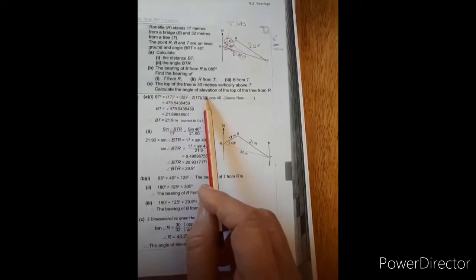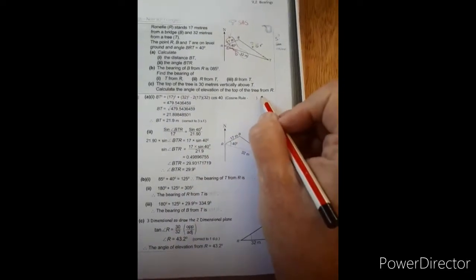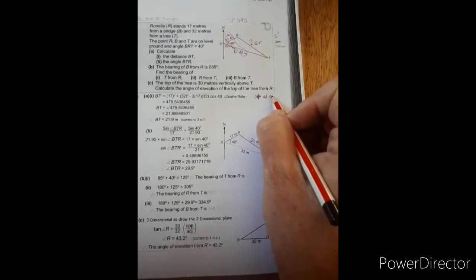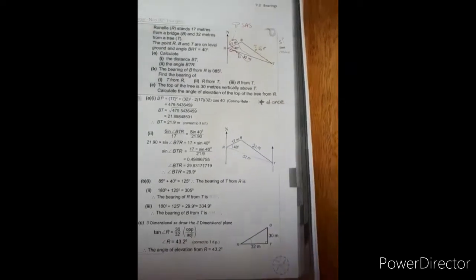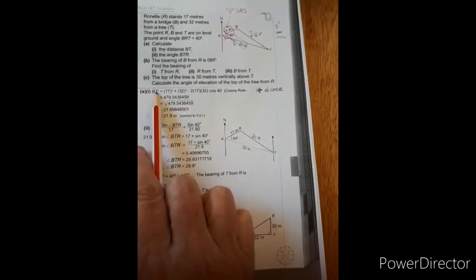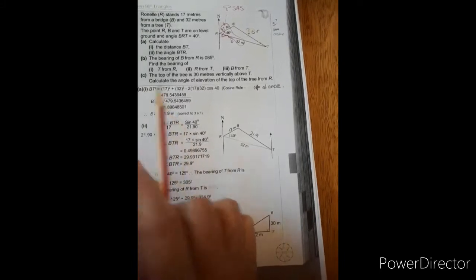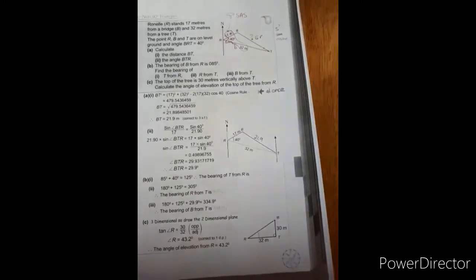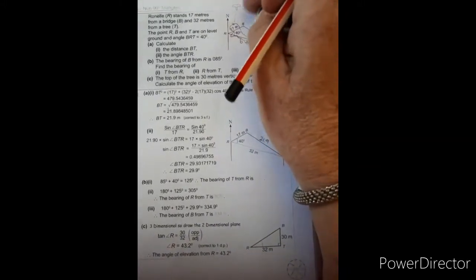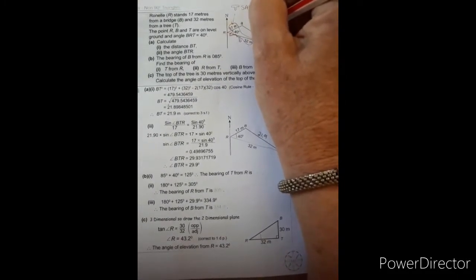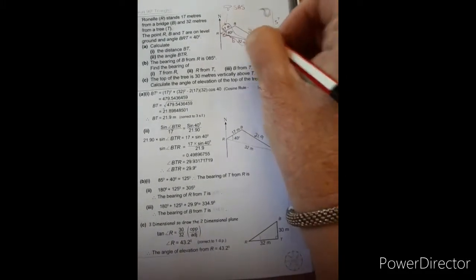So when you read that into your calculator, remember it is very important that this is read into the calculator all at once. Do not place equal signs in between. Then we get the 479, and to get rid of the square, we must take the square root. So my distance is 21.9 meters.